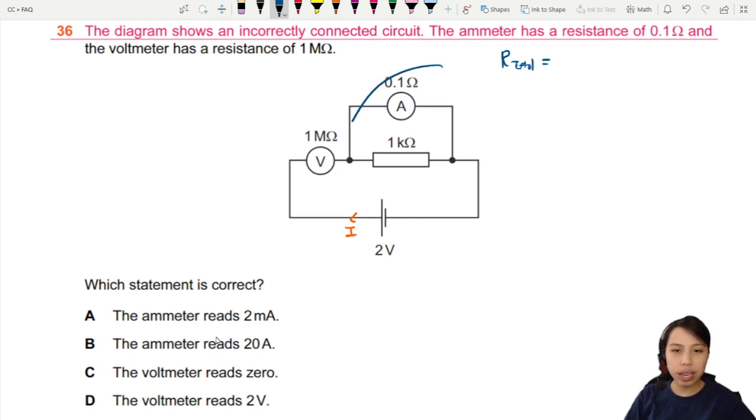So total resistance, I need to combine these two in parallel. So 1 over 0.1 plus 1 over 1000, that's for those in parallel. Then you must add the one in series, so we add 1 times 10 to the 6. That's super big.